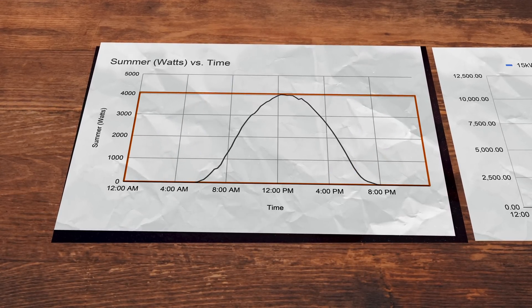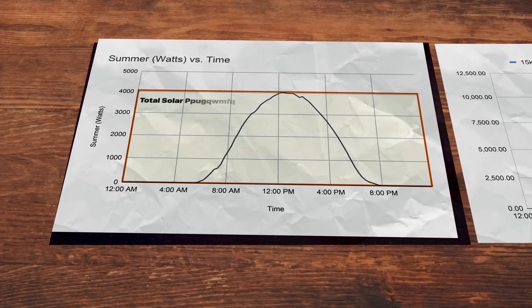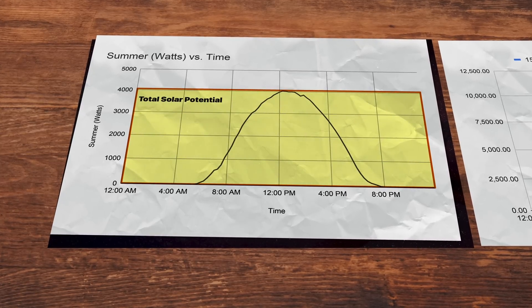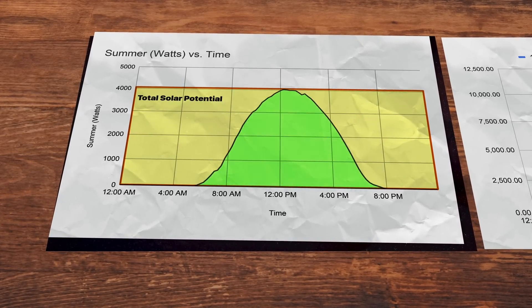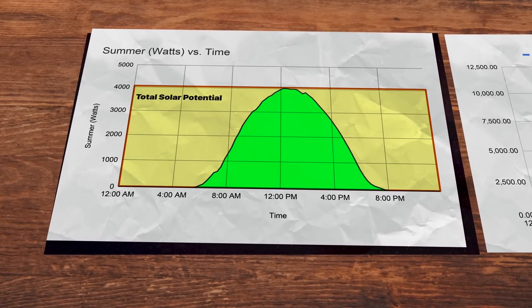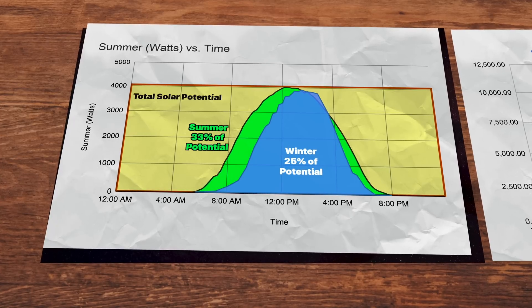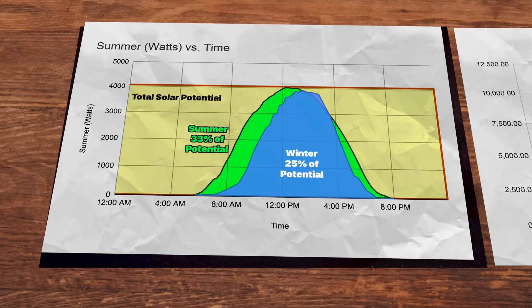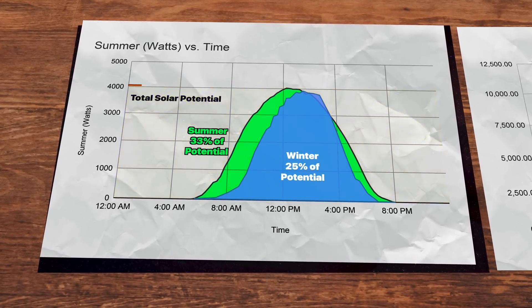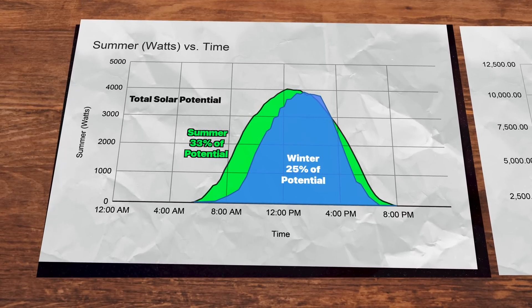Using the maximum solar peak for summer and winter, we can calculate the theoretical potential for a 24-hour period versus what my system at my old house actually produced. It turns out in the winter, it's closer to 25% and 33% in the summer. So not 50%, but 25% and 33%. And it's actually a bit more complicated still.